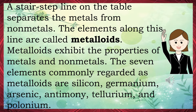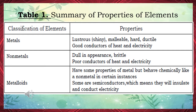Metalloids exhibit the properties of metals and nonmetals. The seven elements commonly regarded as metalloids are silicon, germanium, arsenic, antimony, tellurium, and polonium. Table 1 — Summary of properties: Metals are lustrous, shiny, malleable, hard, and ductile — good conductors of heat and electricity. Nonmetals are dull in appearance and brittle — poor conductors of heat and electricity. Metalloids have some properties of metals but behave chemically like nonmetals; some are semiconductors, meaning they can insulate and conduct electricity.